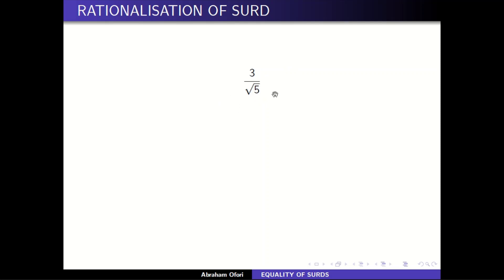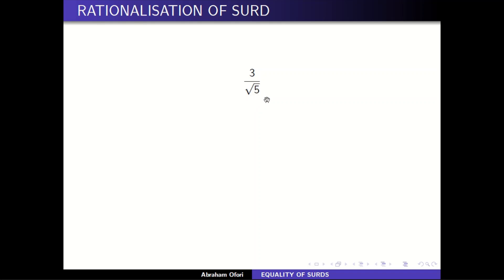I just wanted to show you, in case you meet a question where you are supposed to rationalize a certain surd where the denominator is just one single surd like this, then how do you go about it. If you remember our rule from the previous video, you just multiply both the numerator and denominator by the conjugate surd of the denominator. The conjugate surd of the denominator here is negative square root of five. So if you have just a single square root at the denominator, just multiply both numerator and denominator by the same square root, and then it will rationalize the denominator.